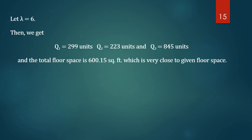With λ = 6, Q1 = 299 units, Q2 = 223 units, and Q3 = 845 units. The total floor space required is 600.15 square feet, which is very close to the given floor space of 600 square feet. Therefore, the optimal lot sizes are 299 units for machine part 1, 223 units for machine part 2, and 845 units for machine part 3, minimizing the total inventory cost.